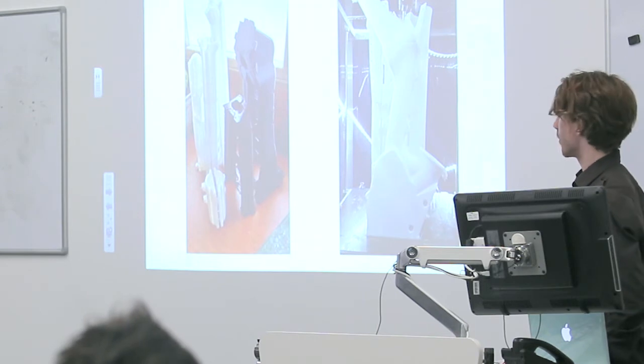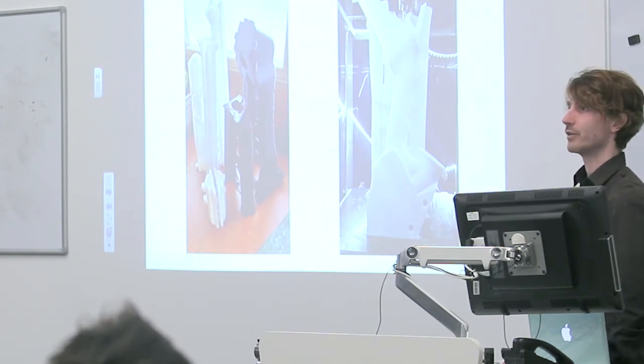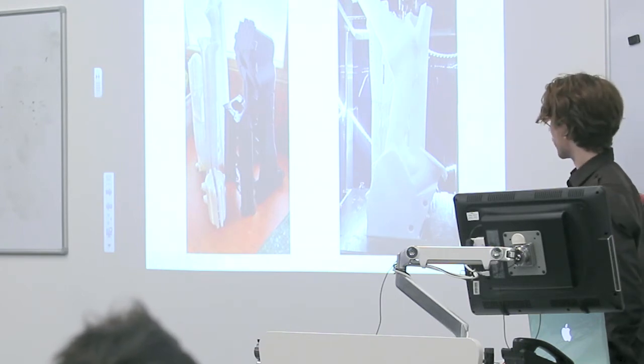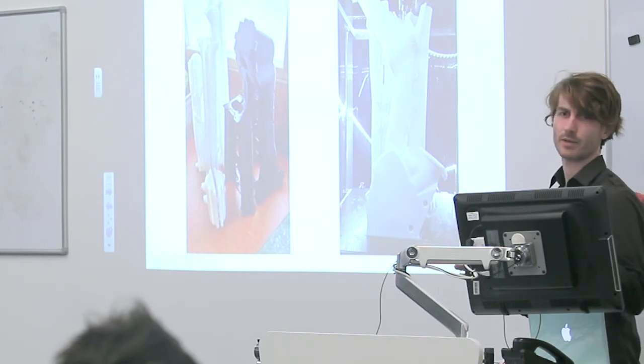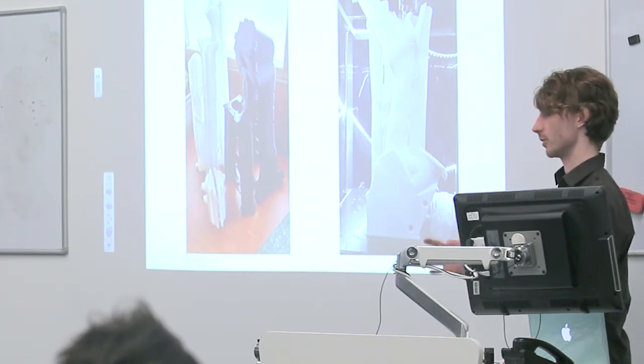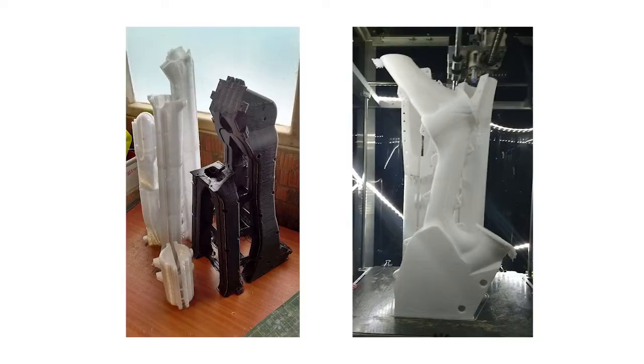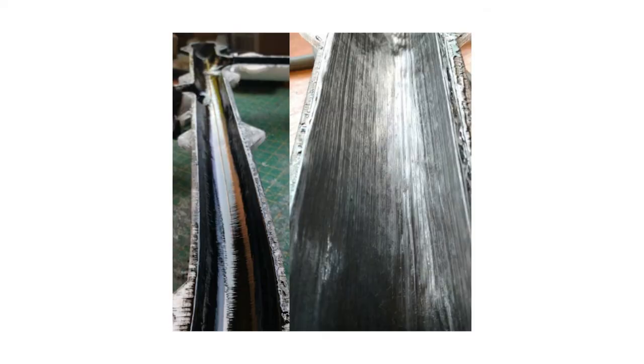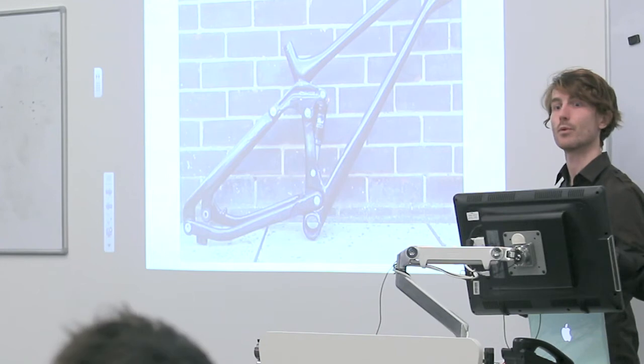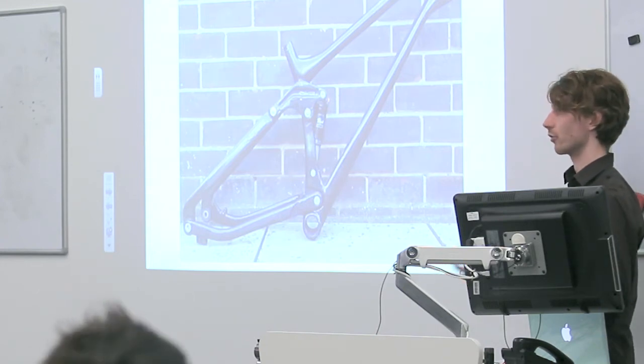Now, sintering isn't the only way that additive manufacture can be used to produce finished, complete frames. There's a company called Carbon Wasp, and this is a much smaller scale enterprise. This is essentially an individual bespoke craft frame builder. And what he does is he uses printed plastic molds to create high-end carbon frames that, again, have that bespoke tailored quality that the Robot bikes have.